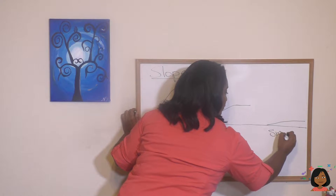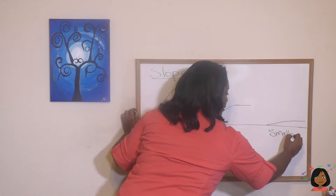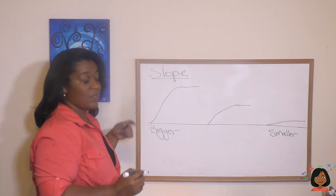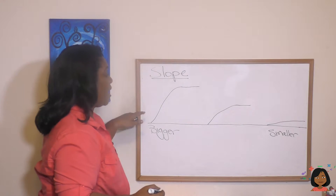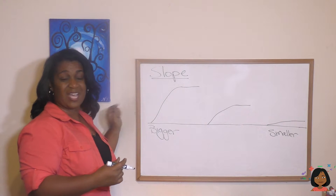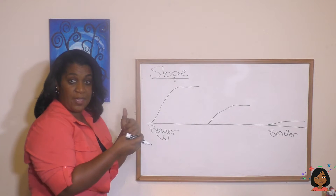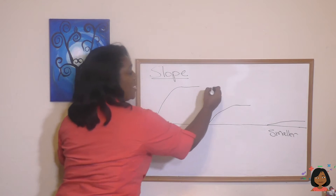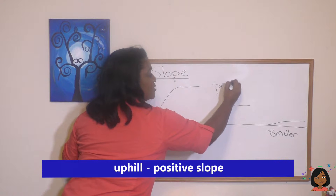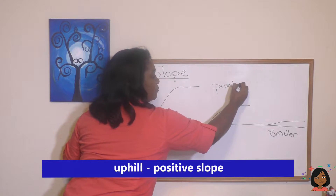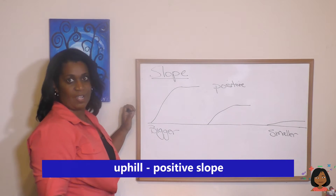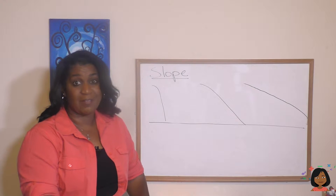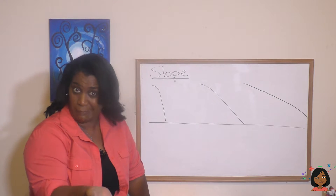The steeper it is, the bigger the slope. Another thing I want to teach you about this kind of slope is that we're going uphill. When we're going uphill, we call that a positive slope. If you went up the mountain or up the hill, you have to come down at a certain point, right?